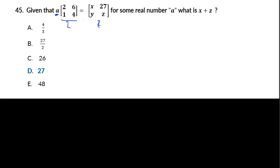In matrix number 2 we have variables all over the place. So given A times this matrix equals this second matrix, for some real number A, what is x plus z?